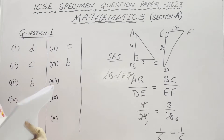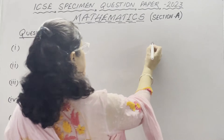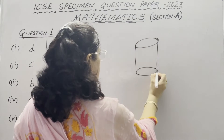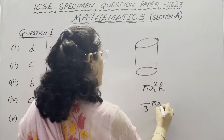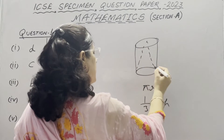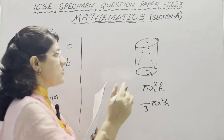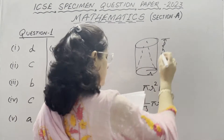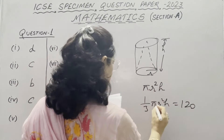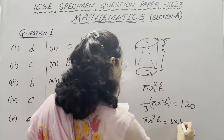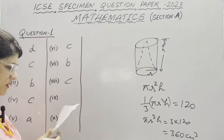In Part 8, the volume of a right circular cone with the same base radius and height as a cylinder is one third of the cylinder's volume. The volume of the cylinder is pi r squared h, and the cone's volume is one third pi r squared h. Since the volume of the cone is given as 120 cubic centimeters, the volume of the cylinder is 3 times 120 equals 360 cubic centimeters. The correct option is C.